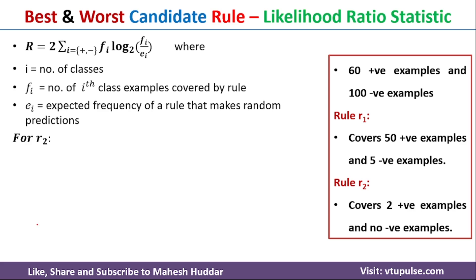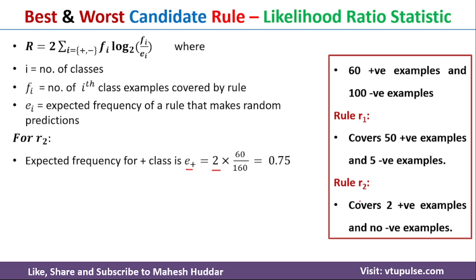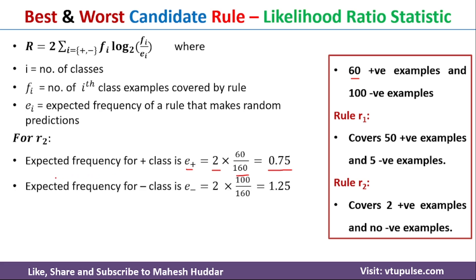Coming back to rule number 2, we calculate the expected frequency for the positive class: e+ = 2 × 60 / 160 = 0.75. Similarly, the expected frequency for the negative class: e− = 2 × 100 / 160 = 1.25.